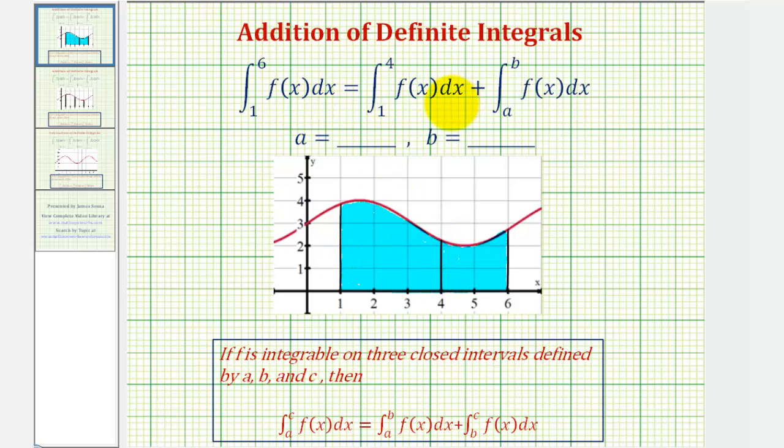Looking at the right side of this equation, we have the integral of f of x from one to four. If we integrate this function on the interval from one to four, it would give us this area here. Therefore, to get the total area, this second integral must be integrated on the interval from four to six, giving us the remaining area. That means a must be equal to four, and b must be equal to six.